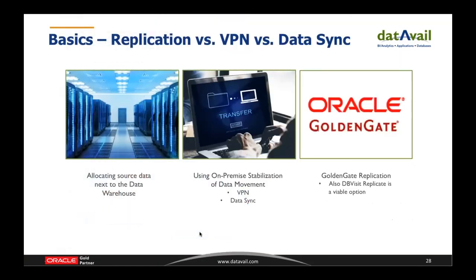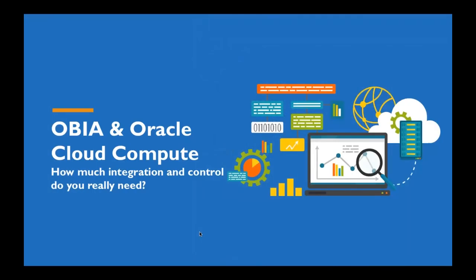For data security and movement, there are multiple options: a VPN tunnel for secure data transfer, an on-premise data sync tool that moves data at a frequency you determine, or full replication for seamless, near-real-time delivery. Replication is especially valuable when combining on-premise financials with cloud solutions like Oracle HCM Cloud, Sales Cloud, or costing and pricing cloud systems.